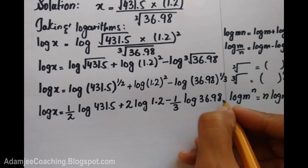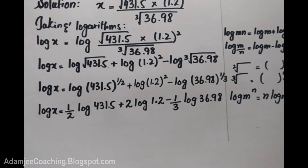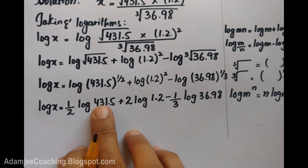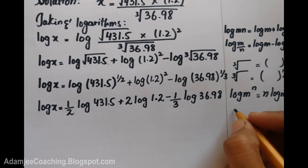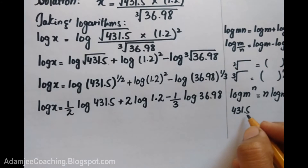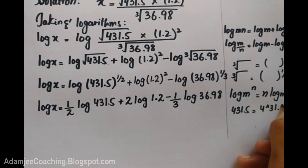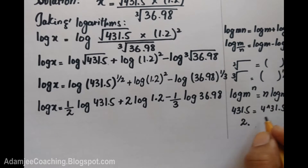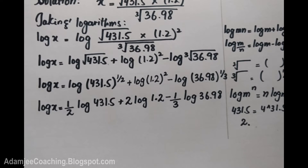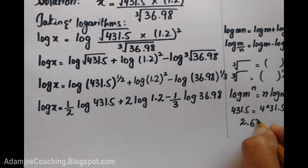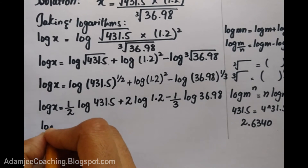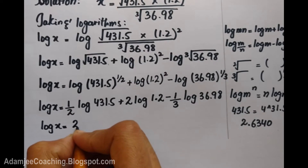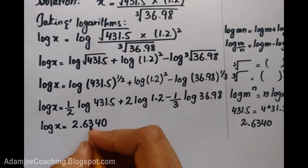For log 431.5: the reference point is after 2 digits then the decimal, so the characteristic is 2 positive. We check in the log table at row 43, column 1 and mean difference 5, giving mantissa 6340. So log 431.5 equals 2.6340, and with the half power we write divided by 2.